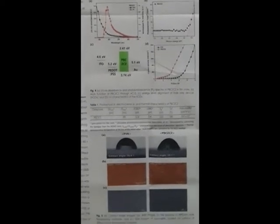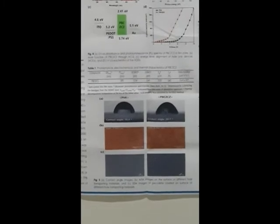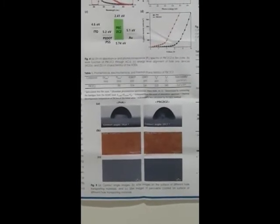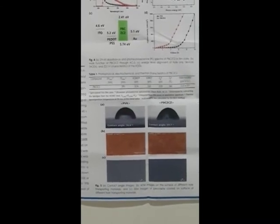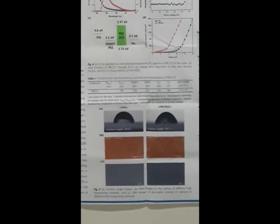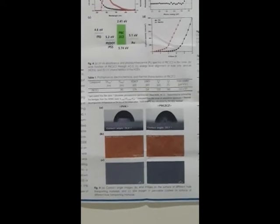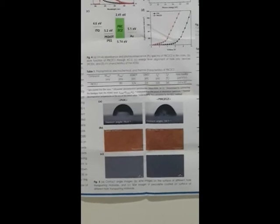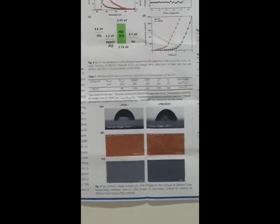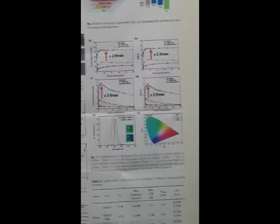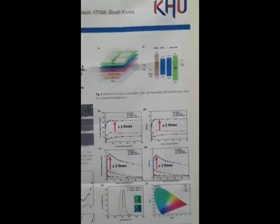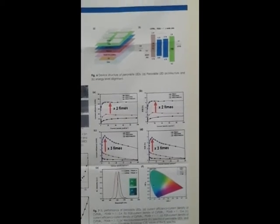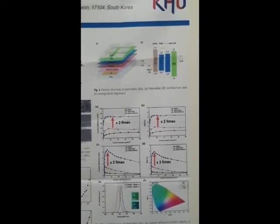Figure 5 shows A, contact angle images; B, AFM images on the surface of different hole-transporting materials; and C, SEM images of perovskite coated on surfaces of different hole-transporting materials. Figure 6 shows device structure of perovskite LED: A shows perovskite LED architecture, and B shows energy level alignment.